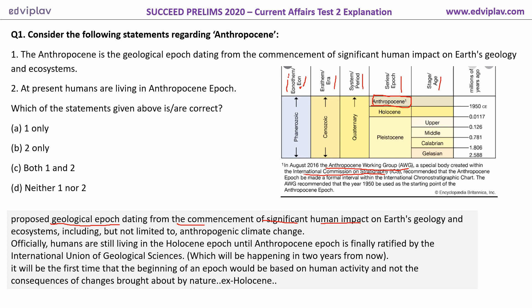Officially, humans are still living in the Holocene epoch, until the Anthropocene epoch is finally ratified by the International Union of Geological Sciences. So unless it ratifies the Anthropocene epoch, it won't be included and it won't be finally approved.